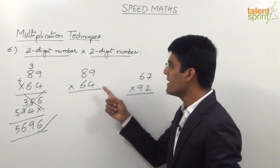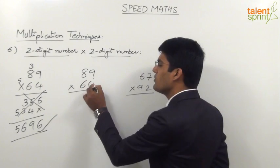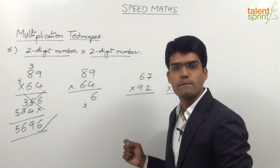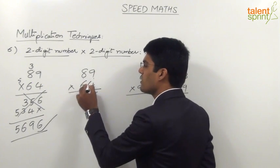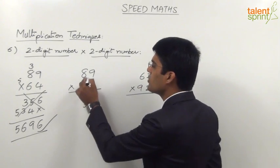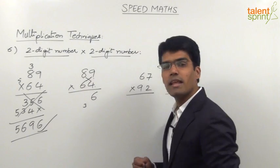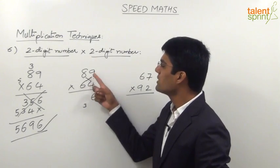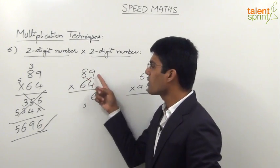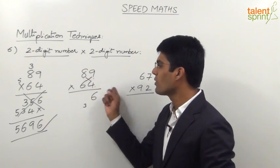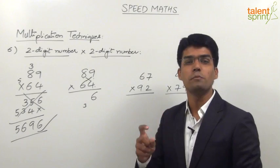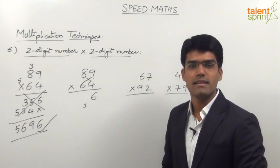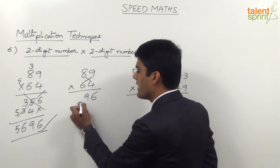The first step is to multiply the units places, that is 9 into 4, which is 36. So we take 6 in the answer and 3 gets carried forward. The second step is cross multiplication of units and tens places: 8 multiplied by 4 and 6 multiplied by 9, and their sum is obtained. So 8 into 4 is 32 and 6 into 9 is 54. 32 plus 54 is 86. 86 plus 3 carry is 89. So we take 9 in the answer and 8 is carried forward.